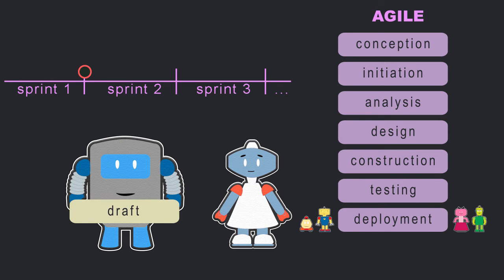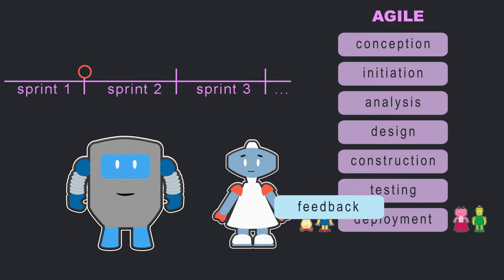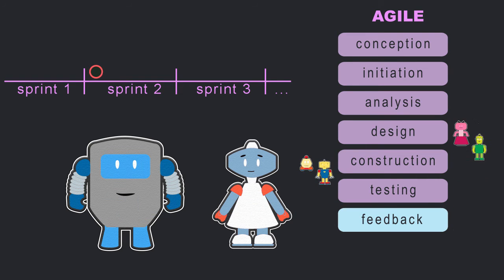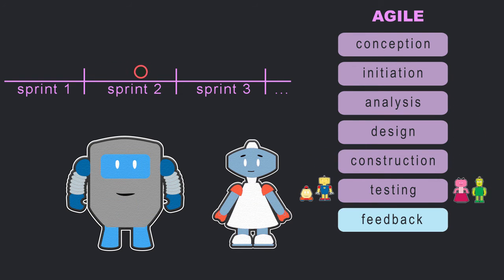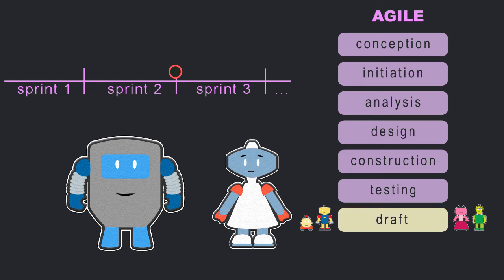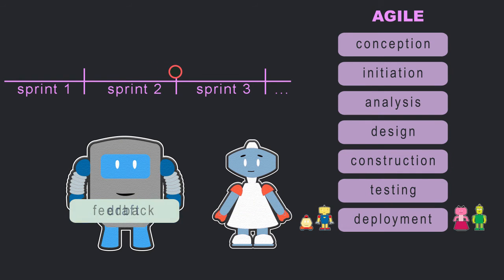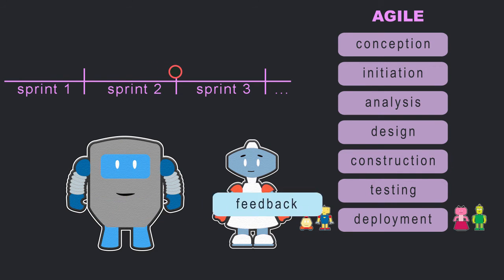The client reviews it and provides feedback, which starts the team on the next sprint. Instead of moving in one direction, agile teams repeat these steps as many times as needed to complete the project.